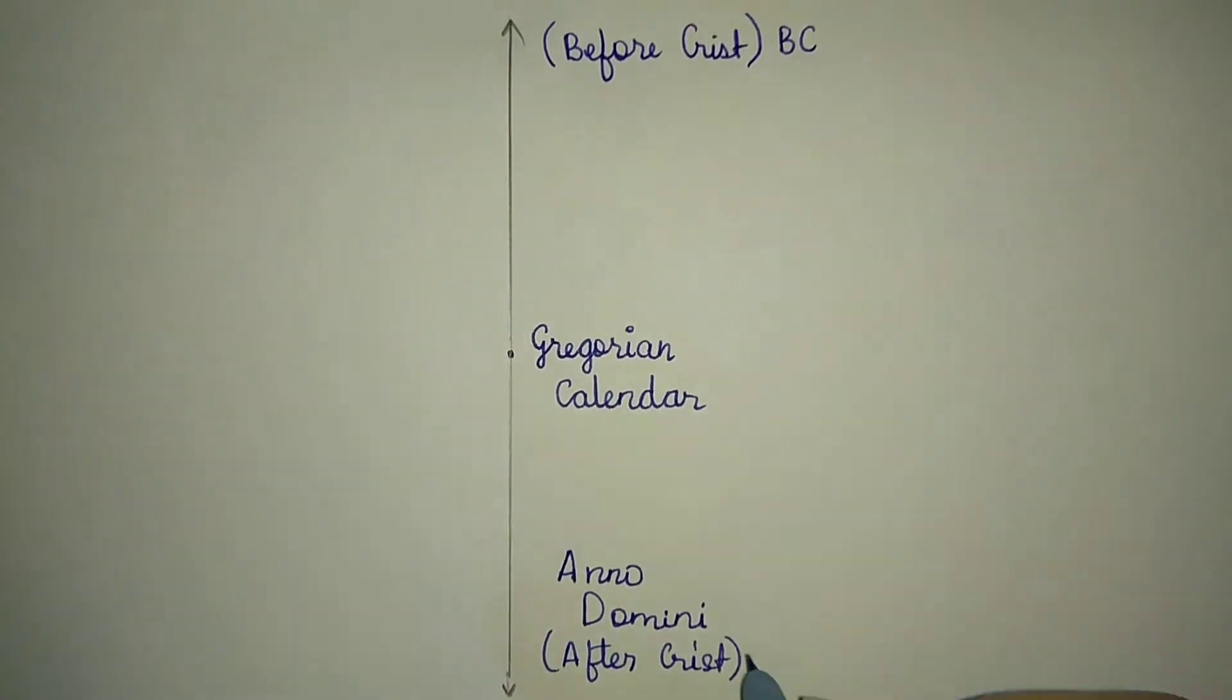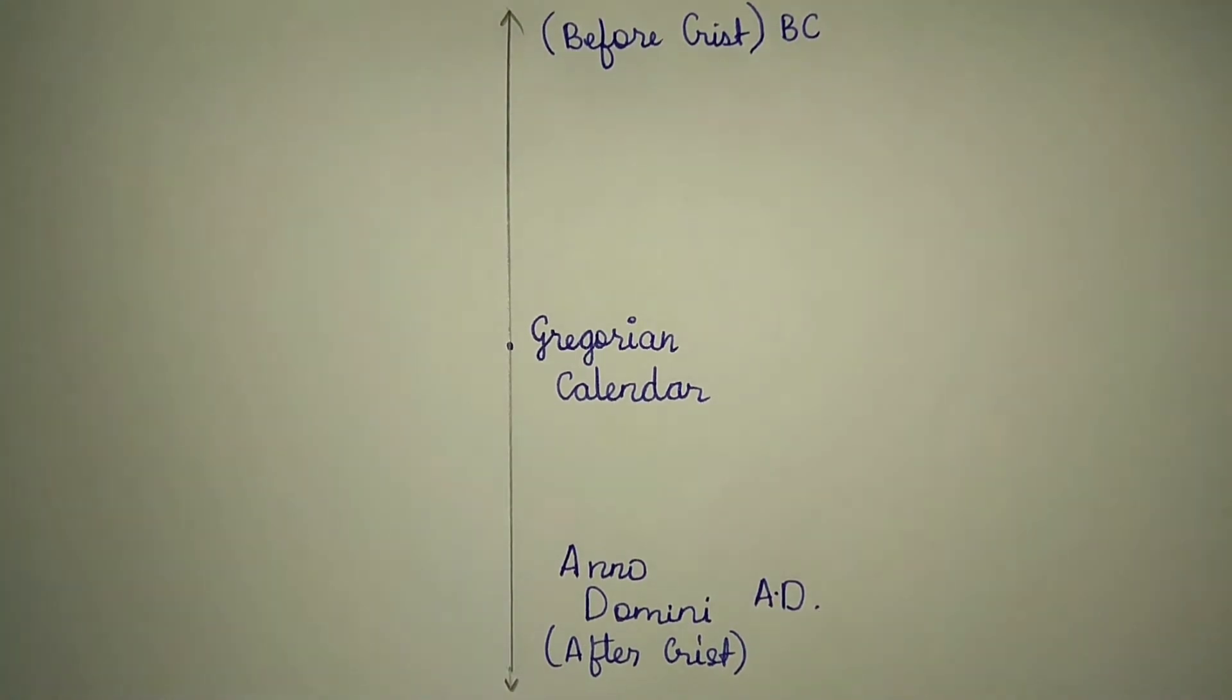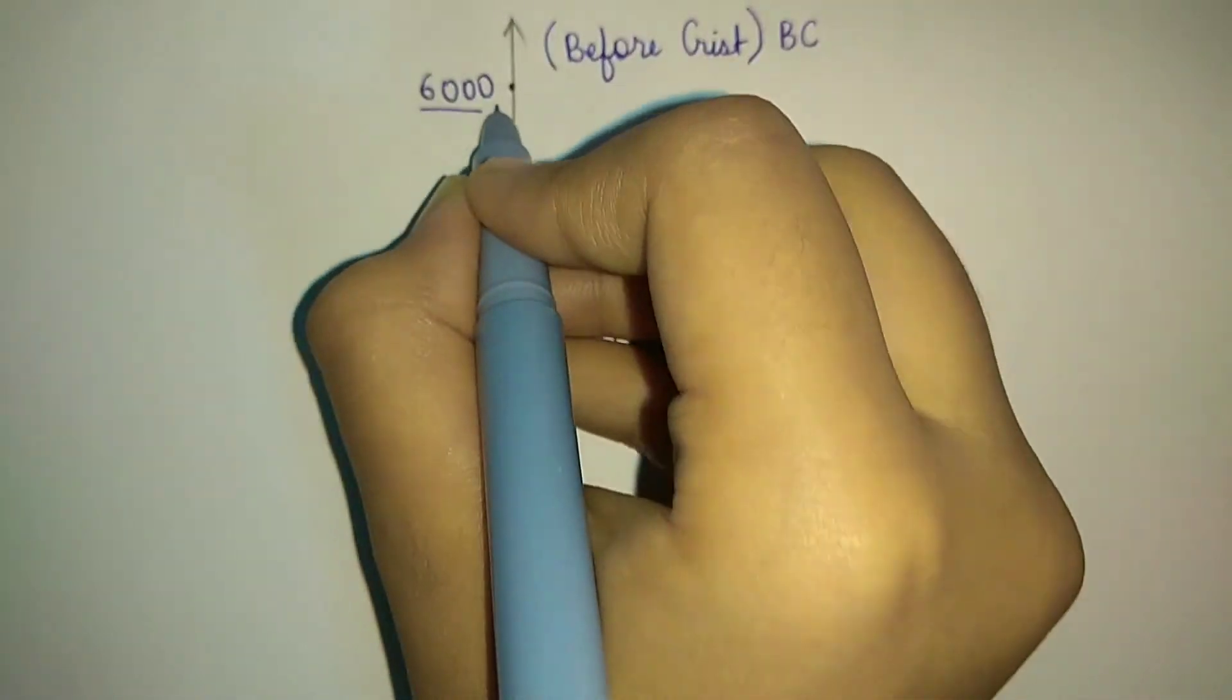Above the current calendar line, we'll mark Before Christ (BC), and below the current calendar line, we'll mark After Christ, which is Anno Domini (AD).